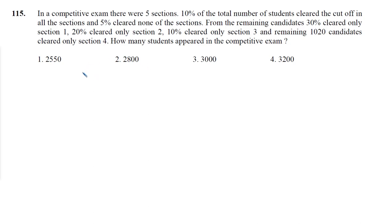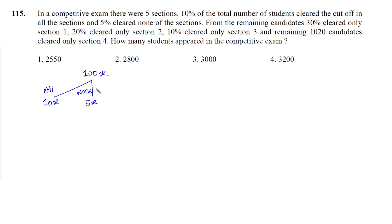So over here, what I will do is let's assume that the total number of students are 100x. Out of that, 10% means 10x cleared cutoff in all the sections. Then 5% means 5x cleared cutoff in none of the sections. And the remaining are 85x students.